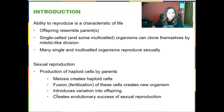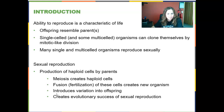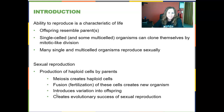Many single and multi-celled organisms can reproduce sexually, however. In sexual reproduction, we're going to have the production of haploid cells by parents. A haploid cell has only one set of chromosomes. The opposite would be a diploid cell — the prefix 'di' means two, so a diploid cell has two sets of chromosomes. In sexual reproduction, haploid cells must be created and must fuse together in a process we call fertilization, creating a new organism with variation unlike the original cells or parents.